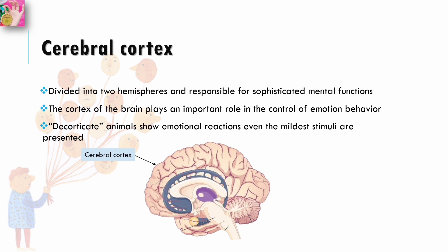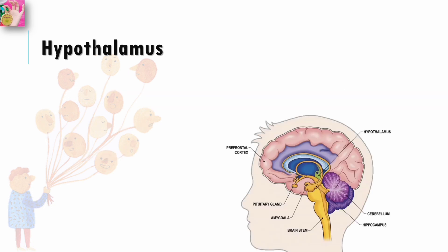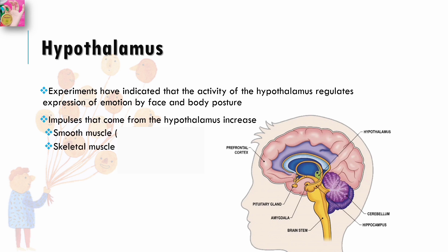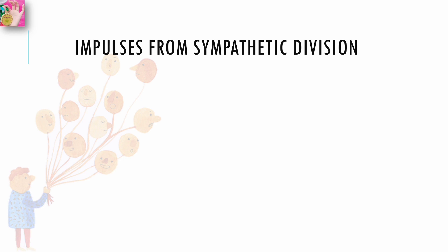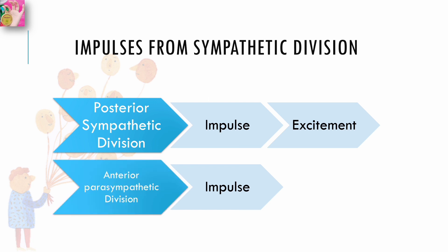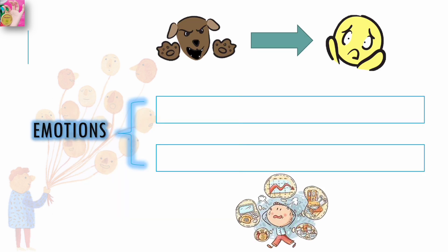Experimental animals whose cortex was removed — so-called decorticate animals — such as dogs and cats, showed emotional reactions, particularly rage and anger, even when the mildest stimuli were presented. Now, regarding the hypothalamus: experiments have indicated that activity of the hypothalamus regulates the expression of emotion through facial expression and body posture. Impulses from the hypothalamus increase both smooth muscle activity, which is involuntary, and skeletal muscle activity, which is voluntary. Impulses from the hypothalamus also determine the types of emotion experienced — if impulses are from the posterior sympathetic division, the emotion felt is excitement.